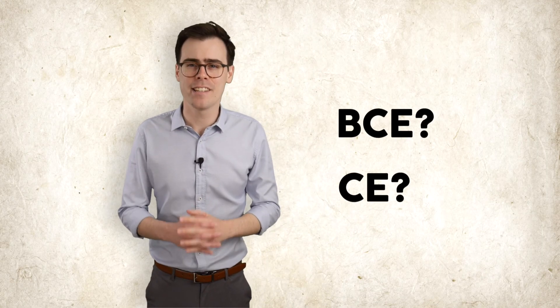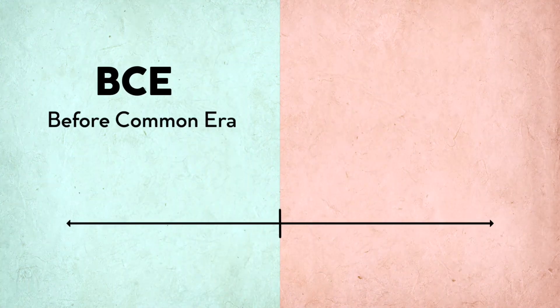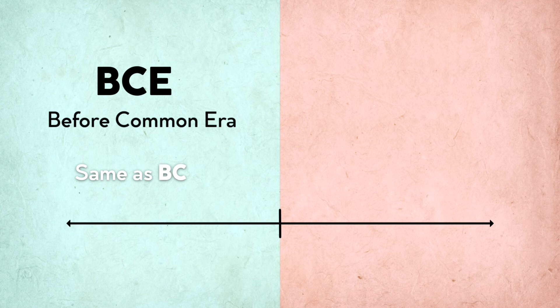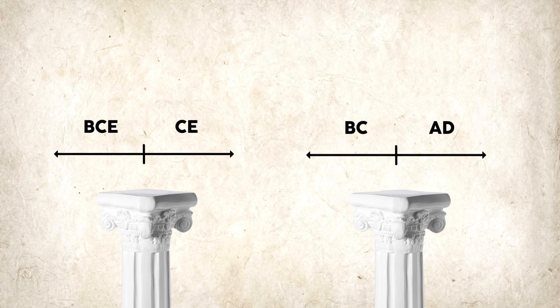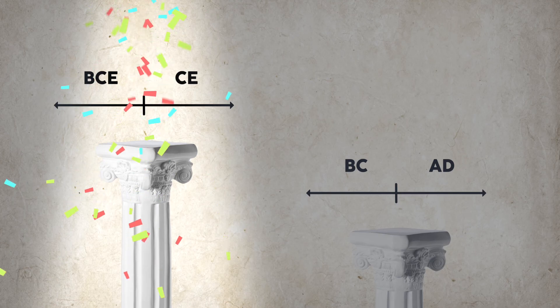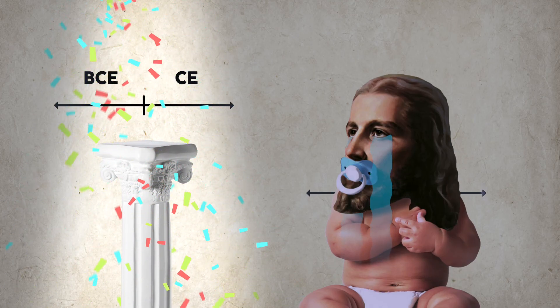You might have also seen dates followed by BCE and CE and wondered what it meant. Well BCE stands for Before Common Era, and it's the exact same thing as BC. CE stands for Common Era, and it's the exact same thing as AD. Using BCE and CE is becoming more popular nowadays because it's a way of recognizing that not everybody believes in Christianity.